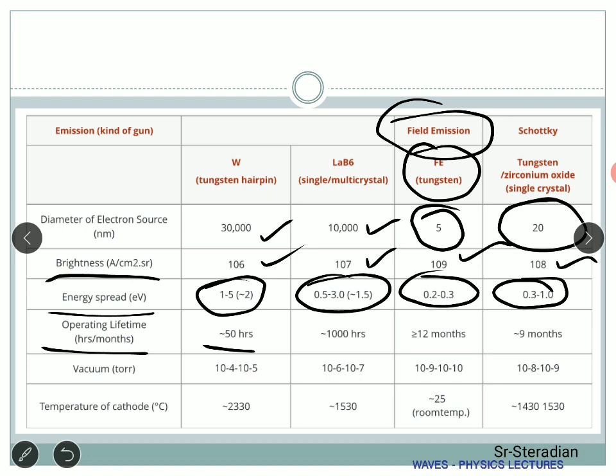Operating lifetime: tungsten hairpin is about 50 hours, lanthanum hexaboride is around 1000 hours, cold field emission is more than 12 months, and Schottky type is more than 9 months. Since no temperature is used in cold field emission, there is no mechanical wear, which accounts for the long lifetime. The vacuum requirements differ: tungsten and LaB6 need around 10⁻⁴ to 10⁻⁵ torr, while field emission requires higher vacuum. The temperature of the cathode is minimum for cold field emission (room temperature), highest for tungsten hairpin, around 1500K range for LaB6, and the Schottky type uses a similar temperature range combined with a field.